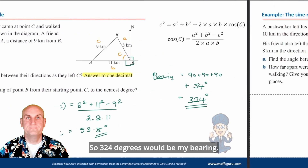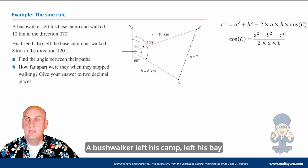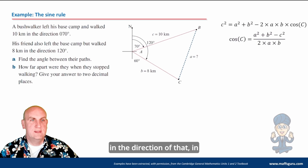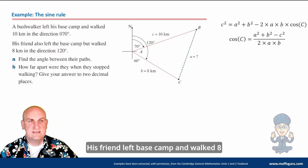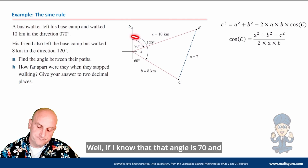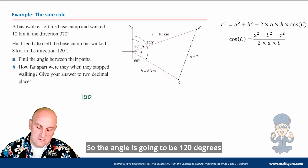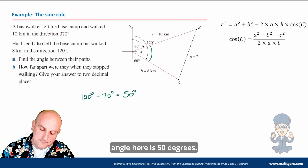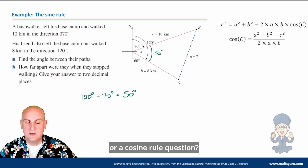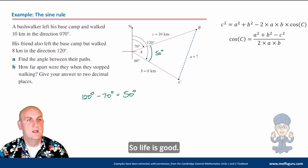Final problem: a bushwalker left base camp and walked 10 kilometers on a bearing of 070 degrees; a friend walked 8 kilometers on a bearing of 120 degrees. Find the angle between their paths. The bearing of 070 means that angle is 70 degrees, and 120 degrees is the other bearing. The angle between their paths is 120 minus 70 equals 50 degrees. I've got two sides hugging that angle — it's a cosine rule question.